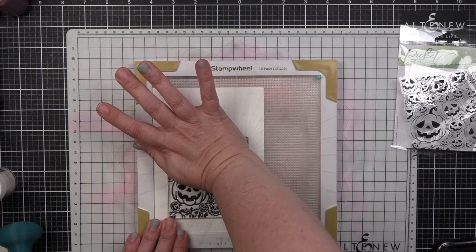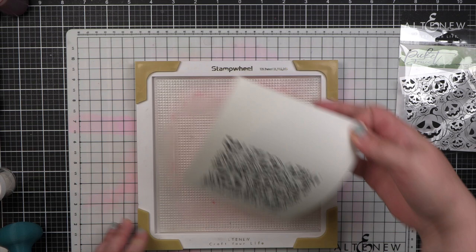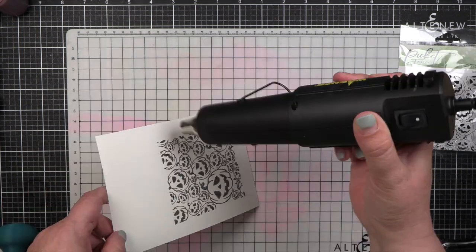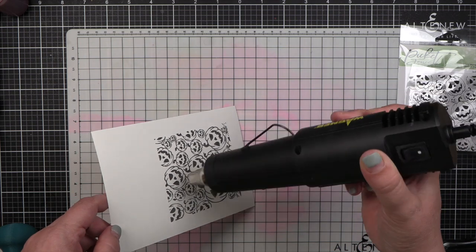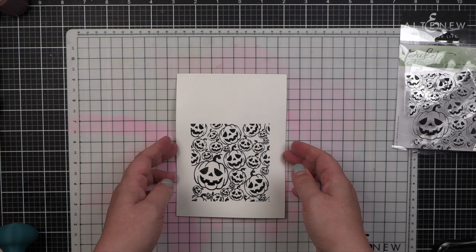Now it's a little tricky, but what I wanted to do with this image was actually to clear emboss over it. You have to be really careful because this is not paper. You have to keep your heat tool moving, but it will do this.